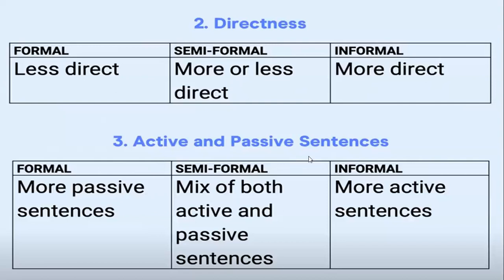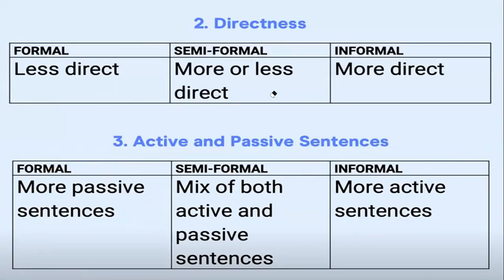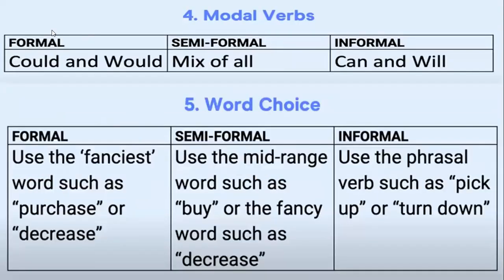The third rule is active and passive sentences. In formal writing, use more passive sentences. When using personal pronouns, express them in passive mode. In general informal writing, use more active sentences.